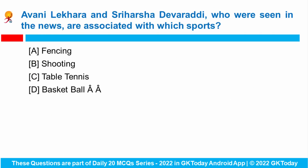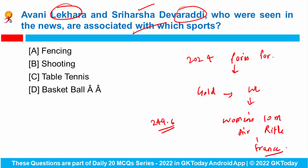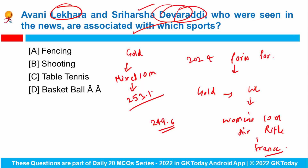Next question: Avani Lekhara and Sriharsh Dev Reddy, who were seen in the news recently, are associated with which sport? Tokyo Paralympics champion Avani Lekhara has secured her place in the 2024 Paris Paralympics after winning the gold medal in the Paralympic World Cup in women's 10 metres air rifle in France, breaking her own record of 249.6. Another para-shooter Sriharsh Dev Reddy won gold in mixed 10 metres air rifle with 253.1 points. Both are associated with shooting.